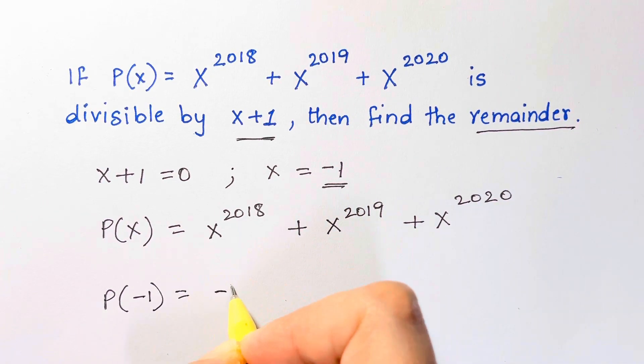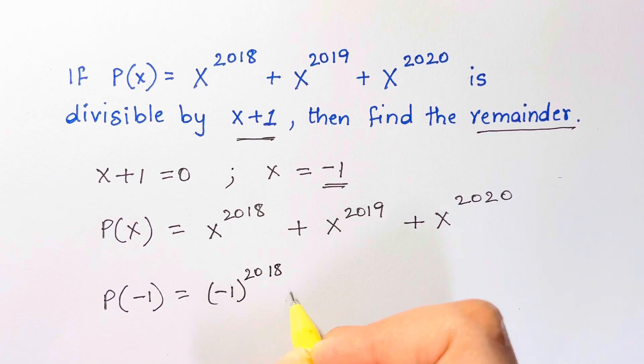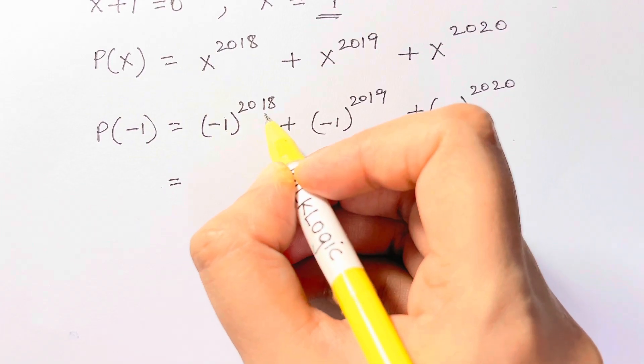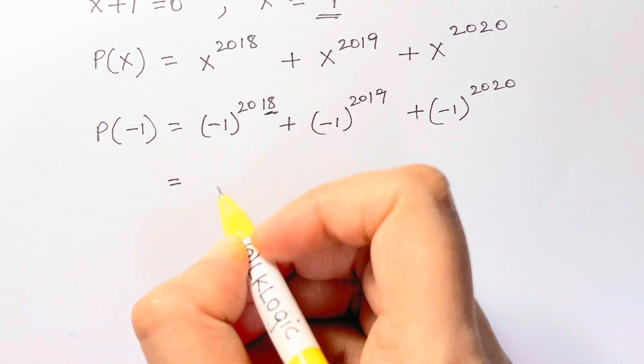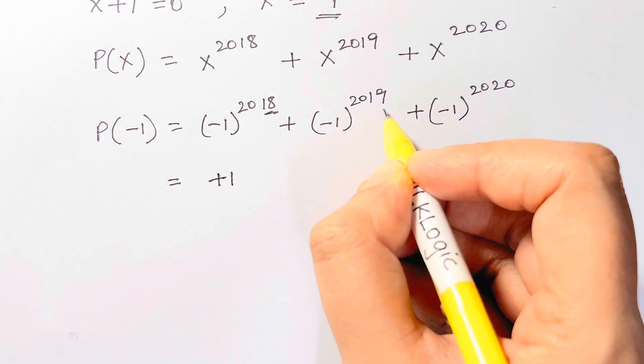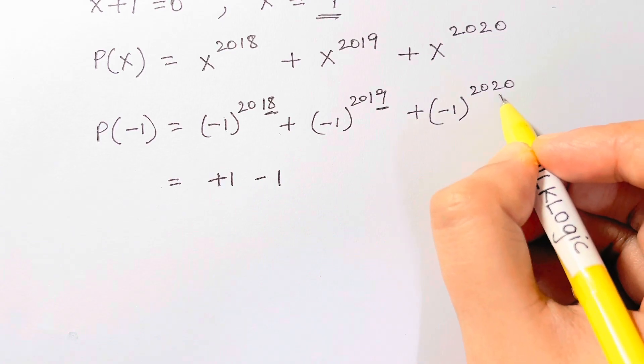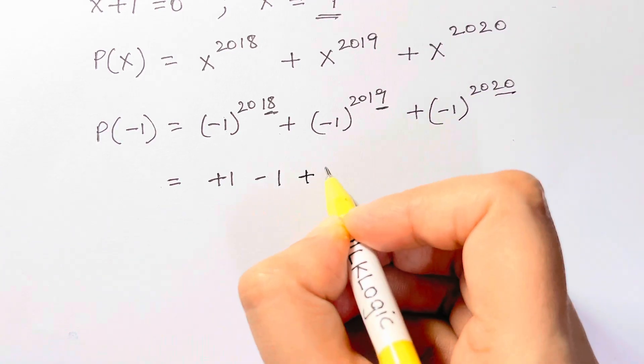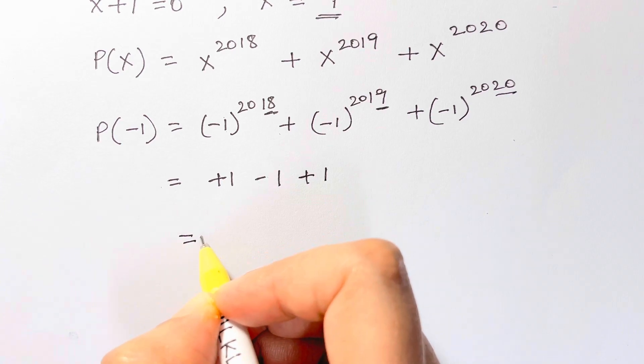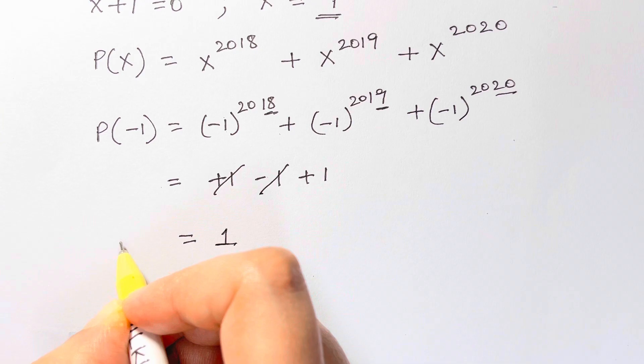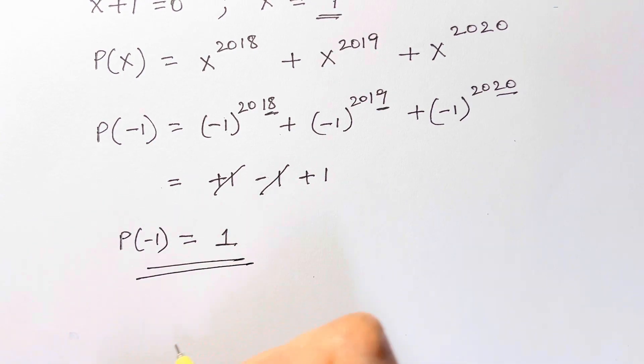So negative 1 to the power of 2018 plus negative 1 to the power of 2019 plus negative 1 to the power of 2020. Whenever you have an even exponent, it turns out to be positive 1. Whenever you have an odd exponent, it turns out to be negative 1. Here even exponent, positive 1. So what do we get? Plus 1 minus 1 gets cancelled, so your answer is just 1. P of negative 1 is 1, that's your remainder.